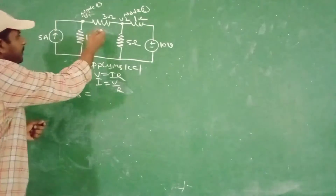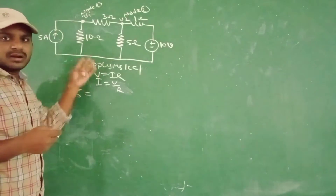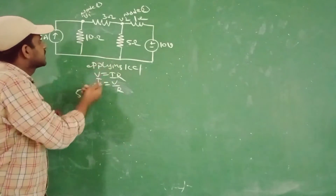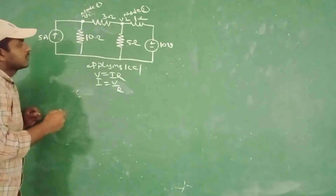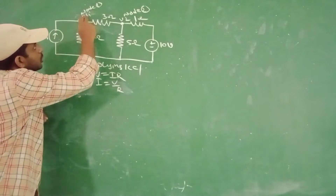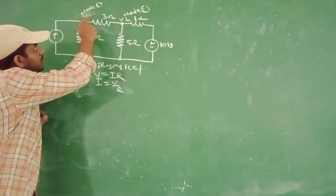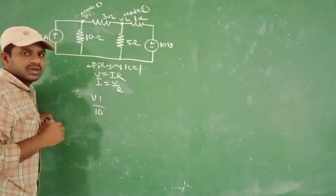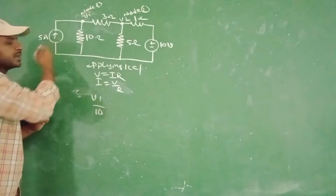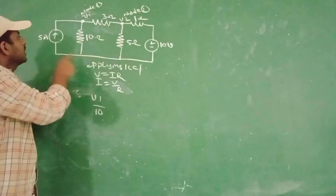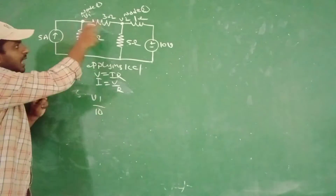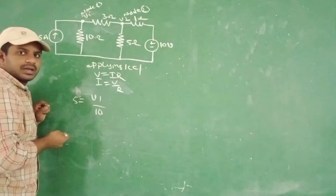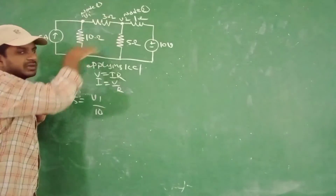Applying KCL here — Kirchhoff's Current Law — based on this we calculate the total current from the given circuit diagram. So I is equal to V by R. The total node voltage is V1, and the total resistance here is 10 ohms, so that gives us V1 by 10. We are also adding the currents — that is minus 5 amperes — so that equals the total current from the given circuit diagram.